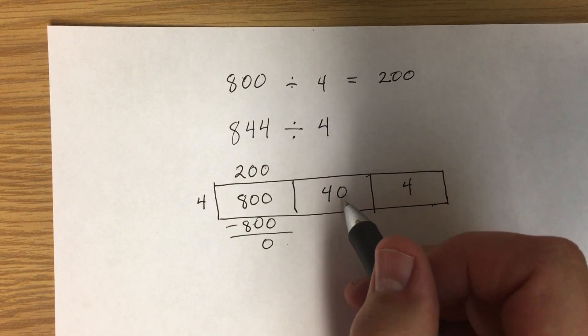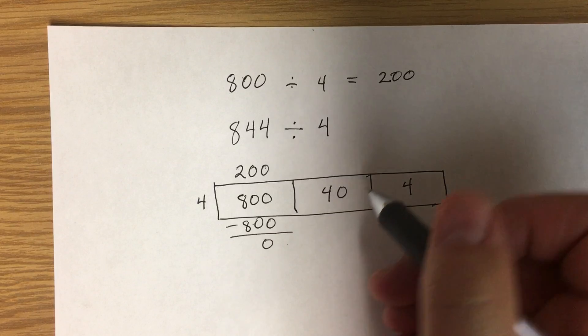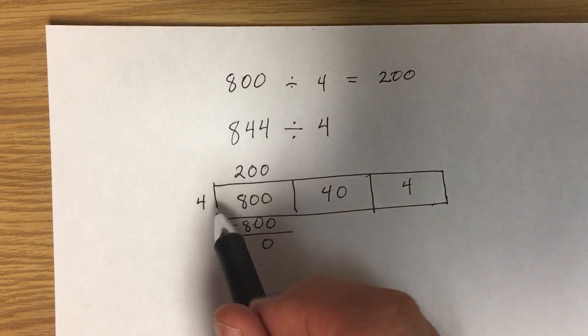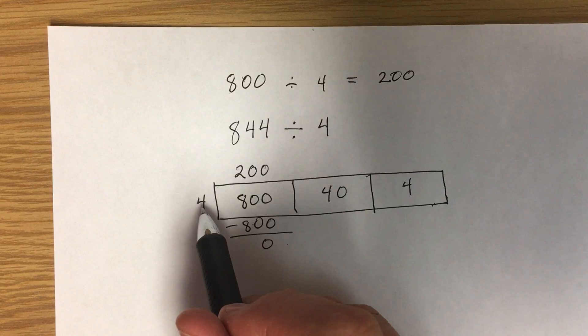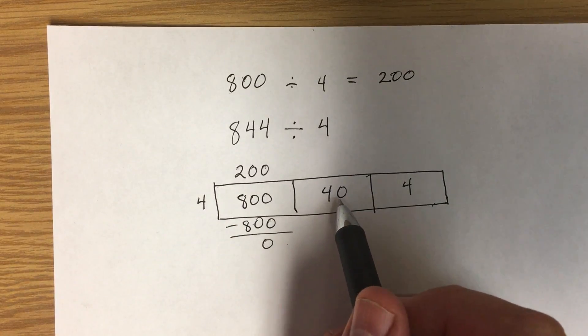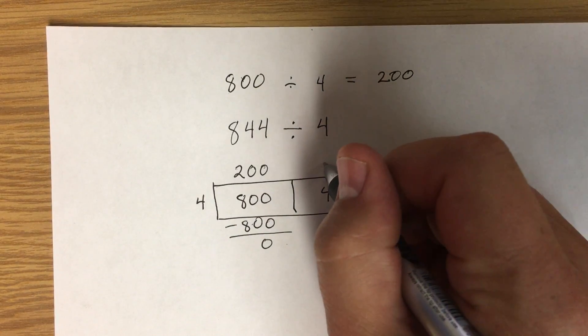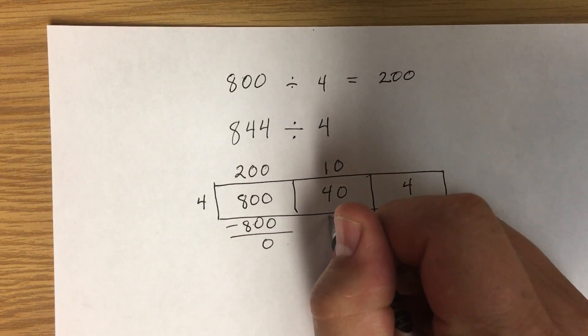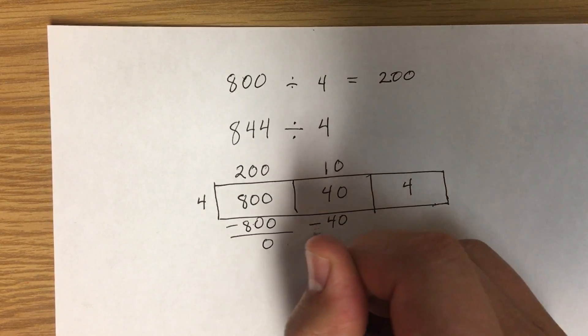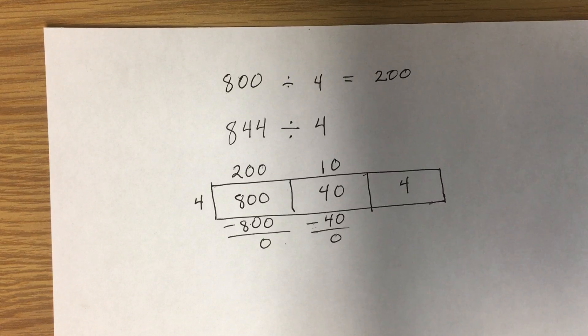So now I can move on to the tens. So for the tens, I want to know how many tens times 4 will fit into 40. So 10 times 4 equals 40. Subtract it. Again, there's nothing left. That's nice.